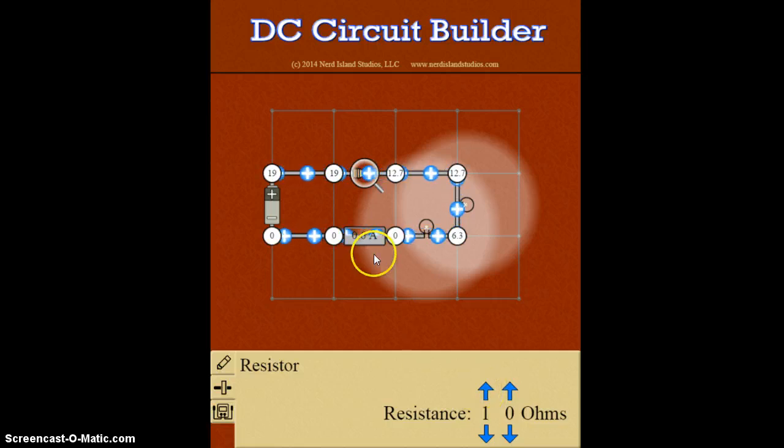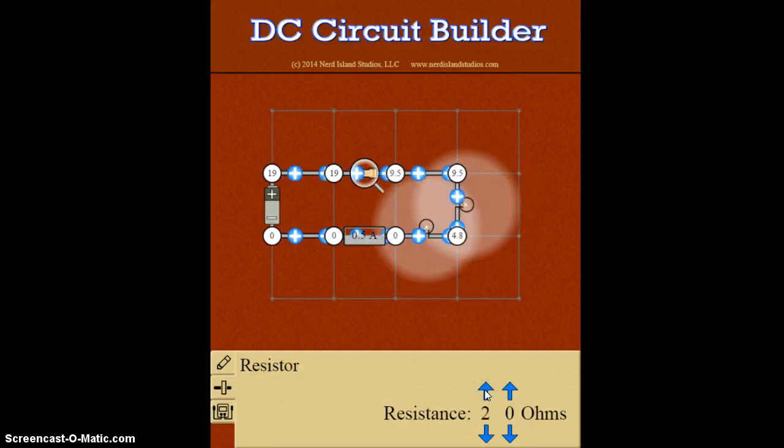Now you can probably guess what will happen if I increase the value of the resistance. Yeah, probably total current will go down because in a series circuit, what flows through one part will flow through all parts. If it's more resistance, it'll be more difficult for current to flow. And you'll probably see the lights will get dimmer. Yep, they're getting dimmer.